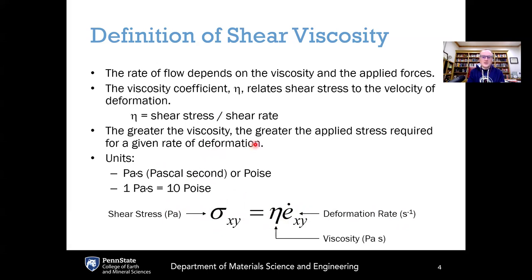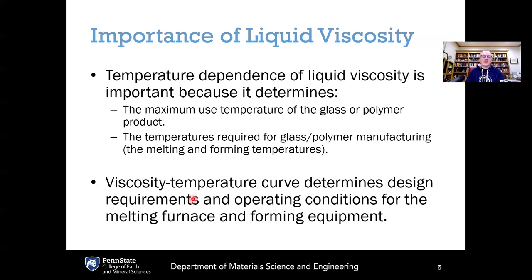The greater the viscosity, the greater the applied stress required for a given rate of deformation. The other unit you will see is the poise, which is an older unit still used in some parts of industry. The conversion factor is easy: one pascal second equals 10 poise. Viscosities are often expressed in logarithmic units because viscosity changes by orders of magnitude. If you have the base 10 logarithm in pascal seconds, you just add one to get the base 10 logarithm in poise.